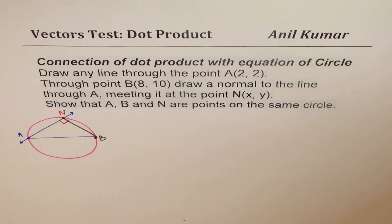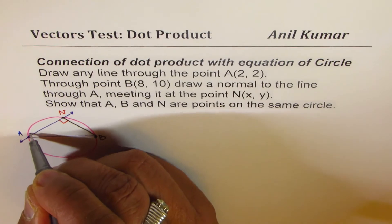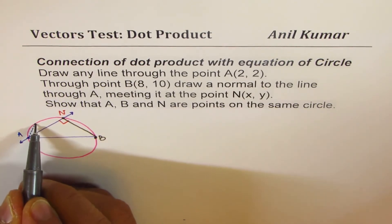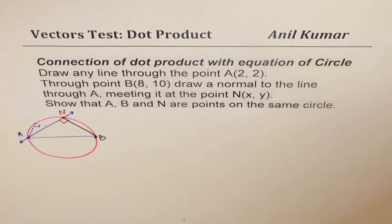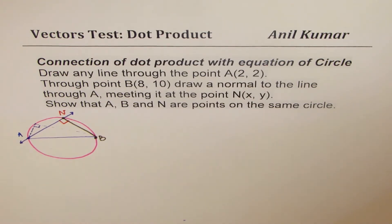I could have drawn a line which is like this, joining point B, it will also be a right triangle. That's the property of a semicircle. So any triangle formed in a semicircle will be a right triangle.